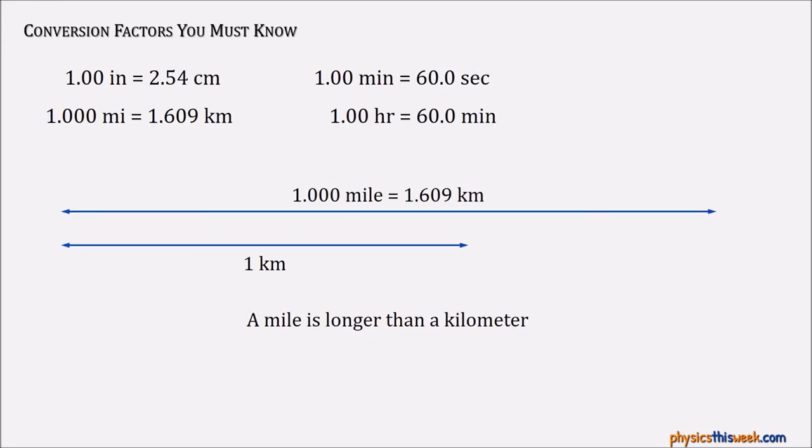Now there are a few conversion factors that you really should know. If you're taking my physics class, you absolutely have to know them. They will be on quizzes. The first one is 1.00 inches is 2.54 centimeters. That's actually a definition. Notice it doesn't go to four significant digits because the people who brought us the metric system decided that would be the actual conversion. That's written into law. The one below that, 1.00 miles is 1.609 kilometers. Sometimes you might see that as 1.6, but usually you want to go to four significant digits. The other two are one minute equals 60 seconds and one hour equals 60 minutes. You should already know those two. So there's really only two new ones here that you need to know.